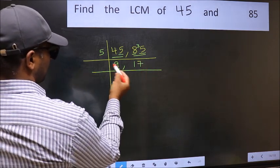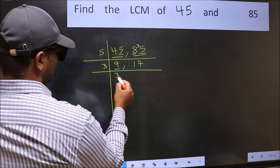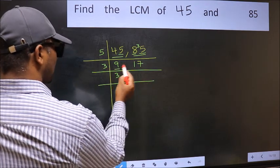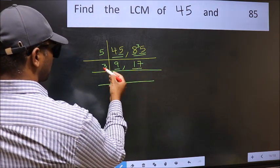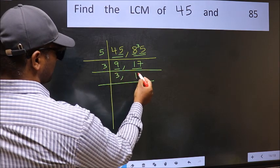Now here we have 9. 9 is 3, 3 is 9. The other number 17 is not divisible by 3, so you write it down as it is.